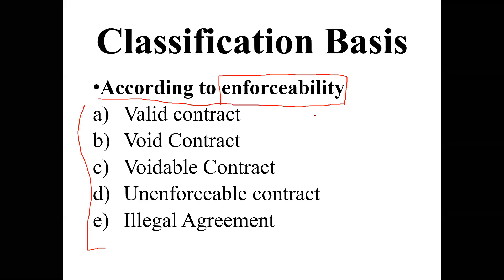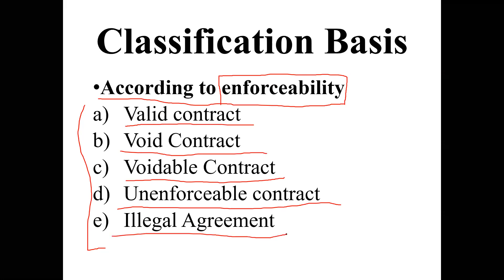As we've already studied the essentials of a valid contract, the only contract which will be straightforwardly enforceable by law is a valid contract. The five types under enforceability are: valid contract, void contract, voidable contract, unenforceable contract, and illegal agreements.